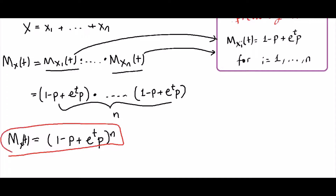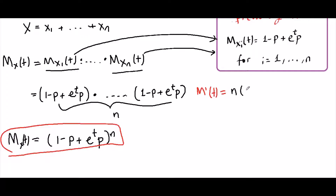Now, using this, we can find the expectation and the variance. We know that the first derivative evaluated at 0 equals the expectation. So let's take the derivative of this. The derivative will be n times (1 minus p plus e^t · p)^(n−1) times the derivative of the inside using the chain rule, which is e^t times p.